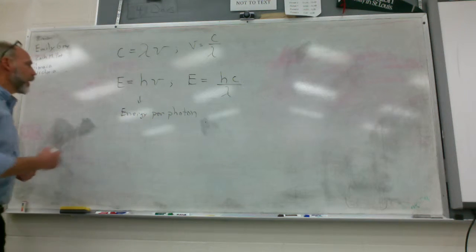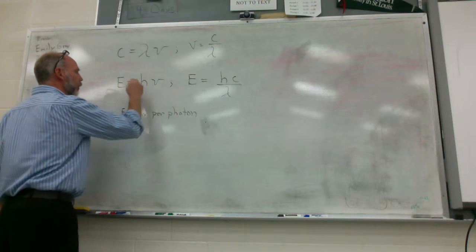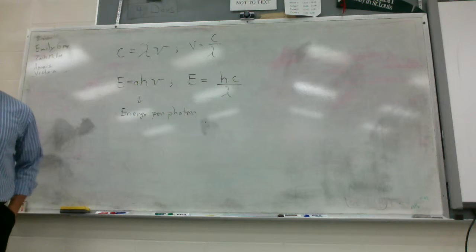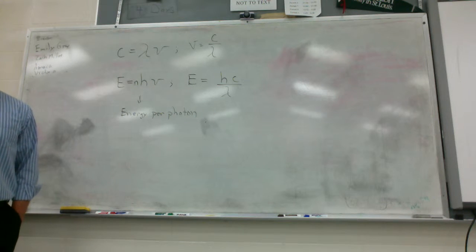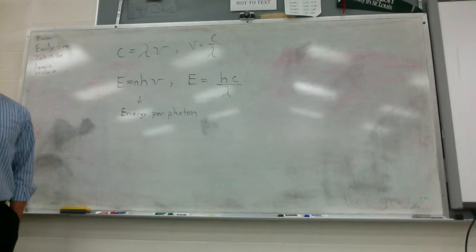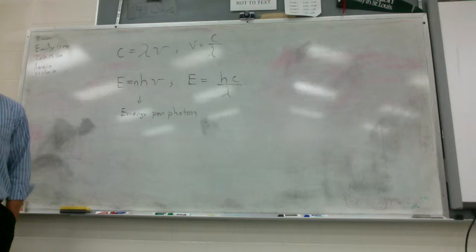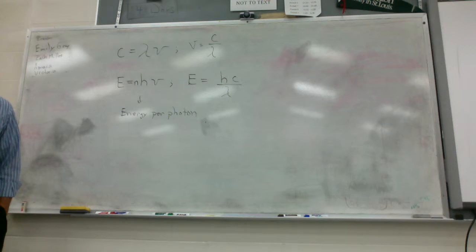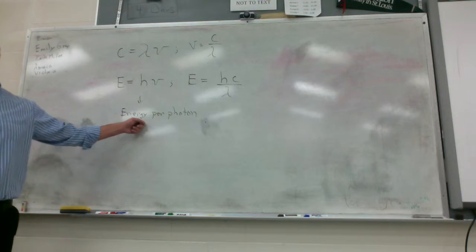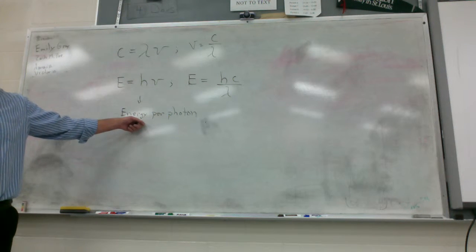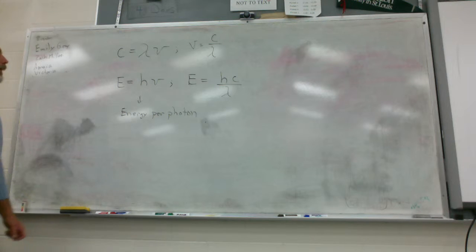But a lot of times, we're going to look at the number of moles of photons. When we do this, we will write the N in there, which represents Avogadro's number. We're not going to do that much this year. I just wanted to show you this so that later in your life, when you take more of this stuff, you'll know where this came from. But we're just going to stick with per photon for the most part right now.